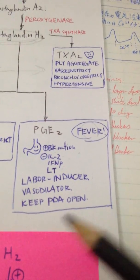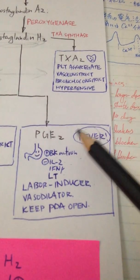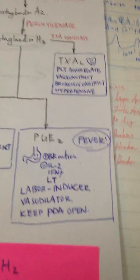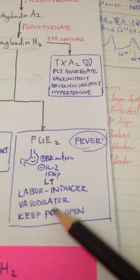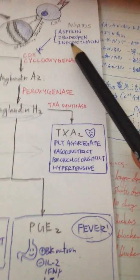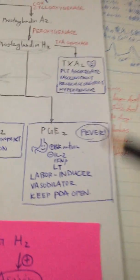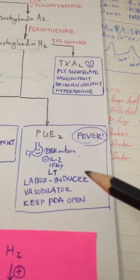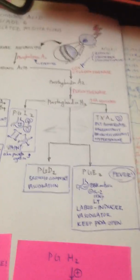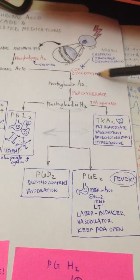In babies, it keeps the PDA open. Sometimes when we want to keep the PDA open, we would give the baby prostaglandin E2, and if you want to close the PDA, we will give the NSAIDs, which I think the drug of choice is ibuprofen for babies whom we want to close the PDA. We've covered the COX pathway, which is the prostaglandin and thromboxane.